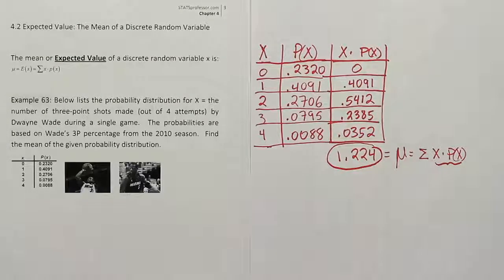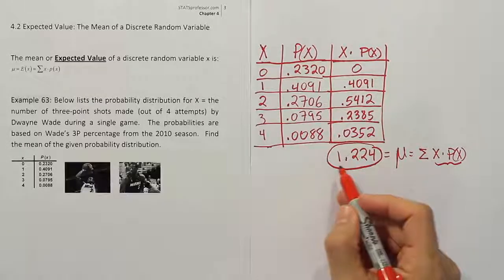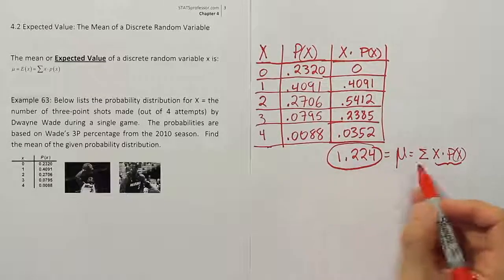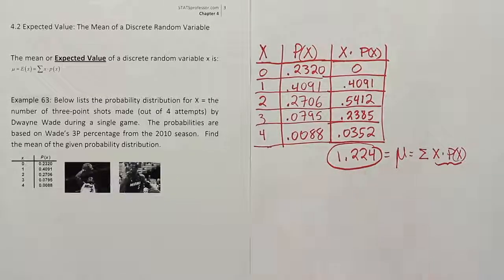So now, what you would do with this average is to say, hey, well, if a coach told Dwayne Wade to take 12 three-point shots minimum per game, it's not guaranteed, but on average, he's going to have close to 3 of those go in, which would equal 9 points for the team collectively. So that would be the idea.